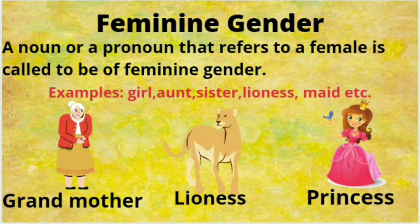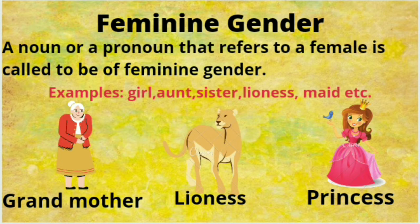Feminine gender — a noun that denotes a female is said to be of feminine gender. Or we can say a noun or a pronoun that refers to a female is called to be of feminine gender. Recall who all are females. There are some females in your family nearby. You call them by some relations like grandmother, lioness, princess, a girl, an aunt, sister, maid.